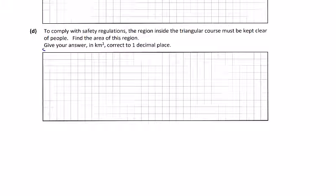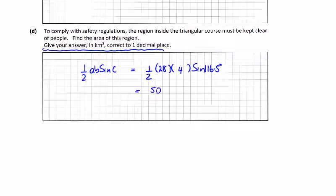In part D, you're asked to find the area inside the triangle. It's really just area inside the triangle. Half AB sin C will give you the area of the triangle - half one side by another side by the sine of the angle between them. The 116.5 is the angle we have, and the two sides between that are 28 and 4. This works out to be 50.1 kilometers squared, correct to one decimal place.